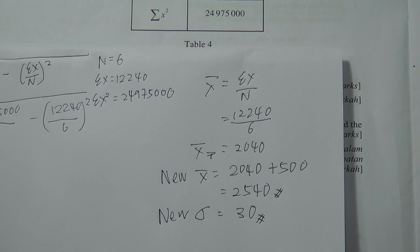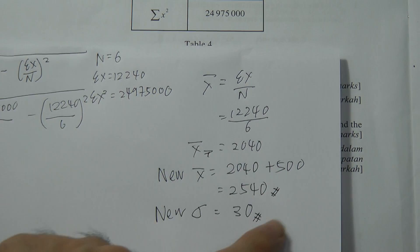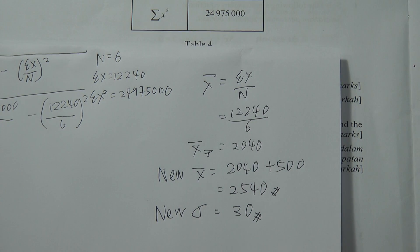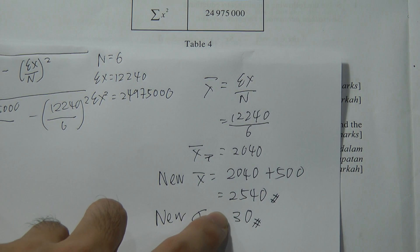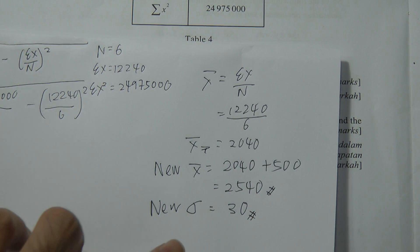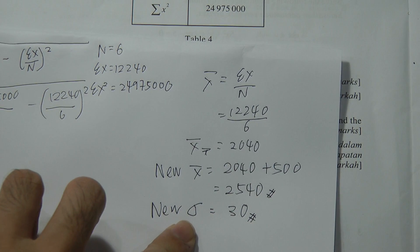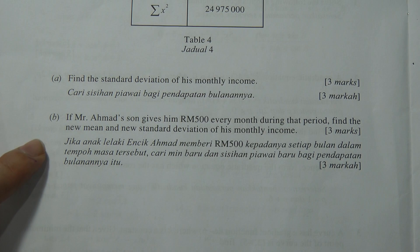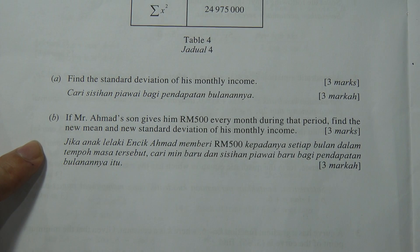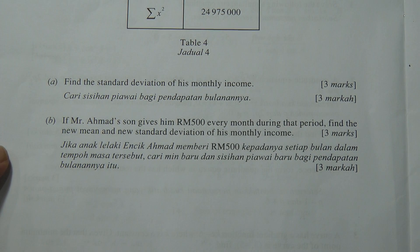The new standard deviation is still 30, because he didn't multiply anything. The standard deviation is only affected by multiplication. Adding or subtracting a constant like 500 does not change the standard deviation.